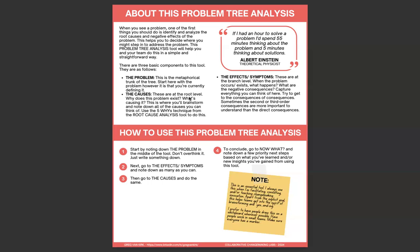The last component is the effects or the symptoms, at the branch level. When the problem occurs or exists, what happens? What are the negative consequences? Capture everything you can think of here — brainstorm and get all the different negative effects up top. Try to get to the consequences of consequences; you can go branches, smaller branches off of bigger branches. Sometimes second or third order consequences are more important to understand than the direct consequences.